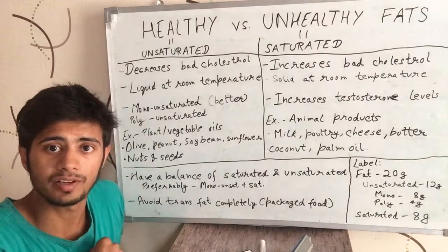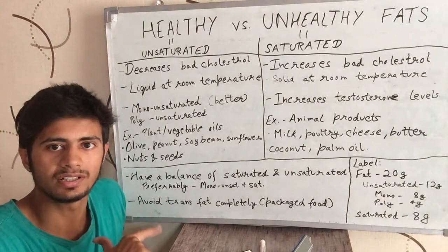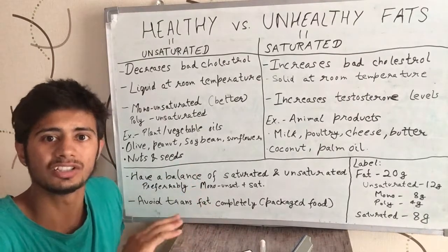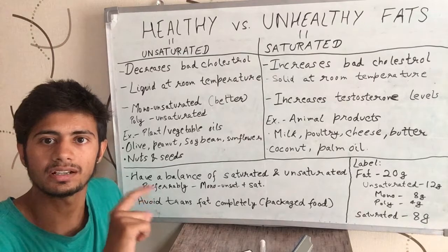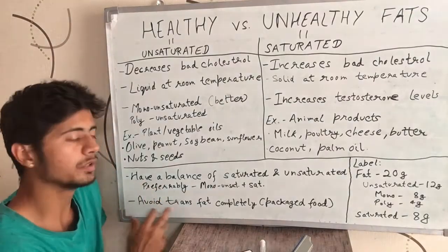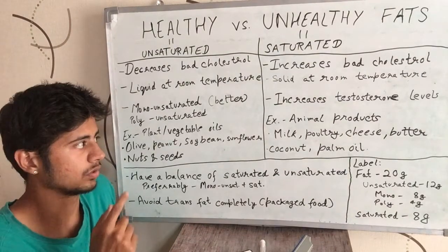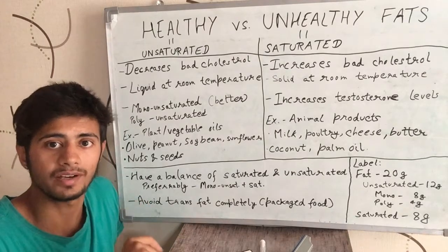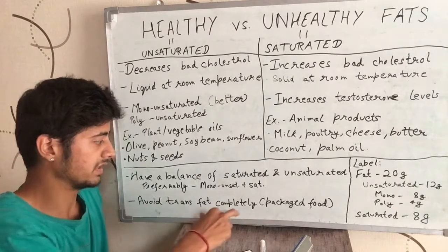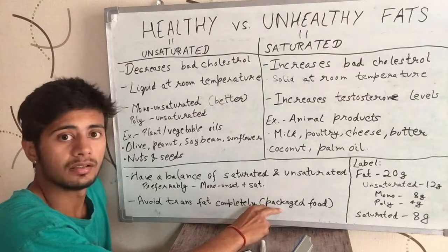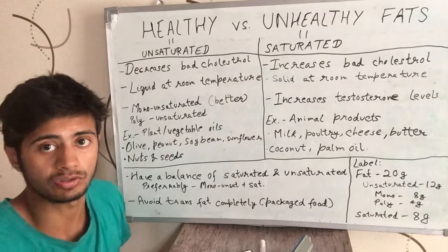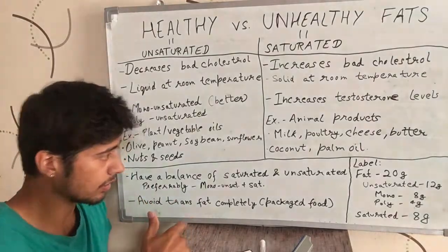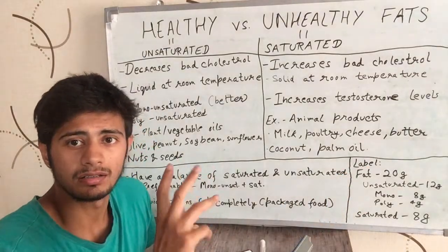Now there are trans fats. These are not naturally occurring fats — they are formed by processing unsaturated fats. I will put a video explaining trans fats and how they are harmful in the future. For now, just understand that you do not need any trans fat in your food. You need both unsaturated and saturated fats to keep your hormonal levels good, but trans fats are the most harmful fats you can consume. You should avoid them completely, as they often occur in packaged and processed food.